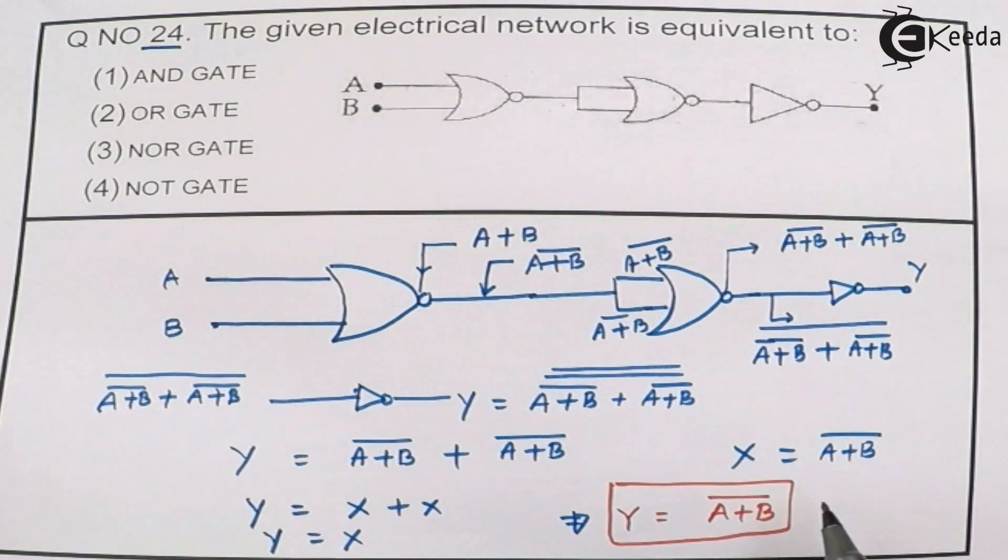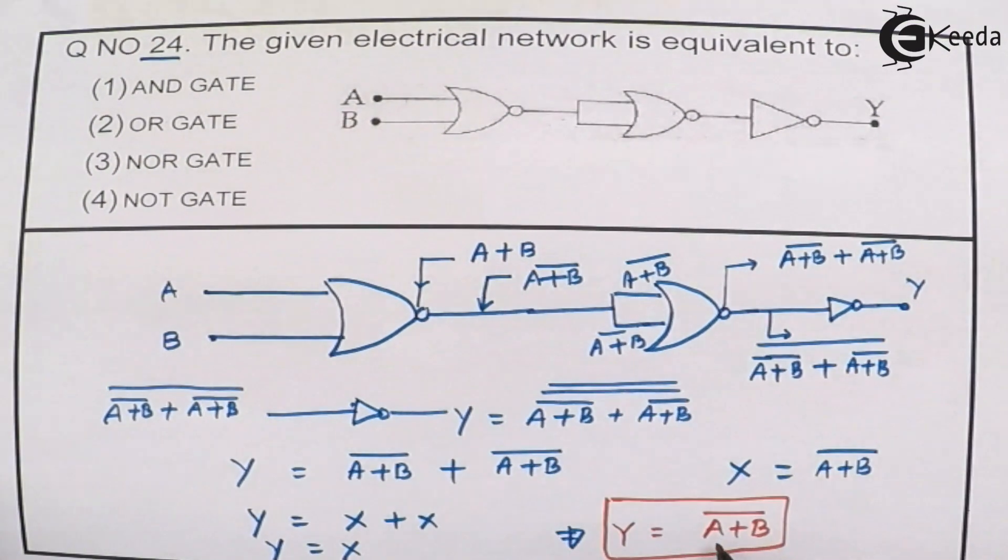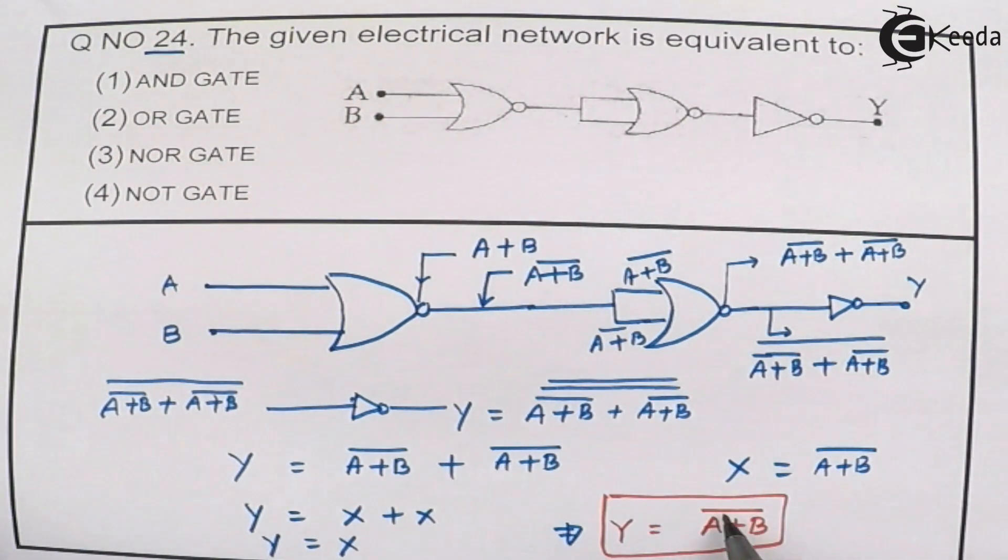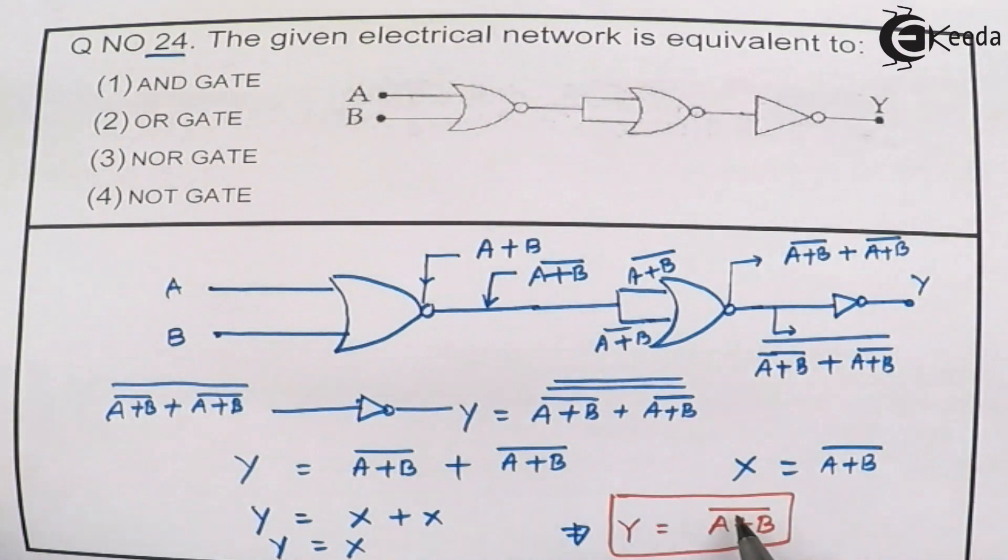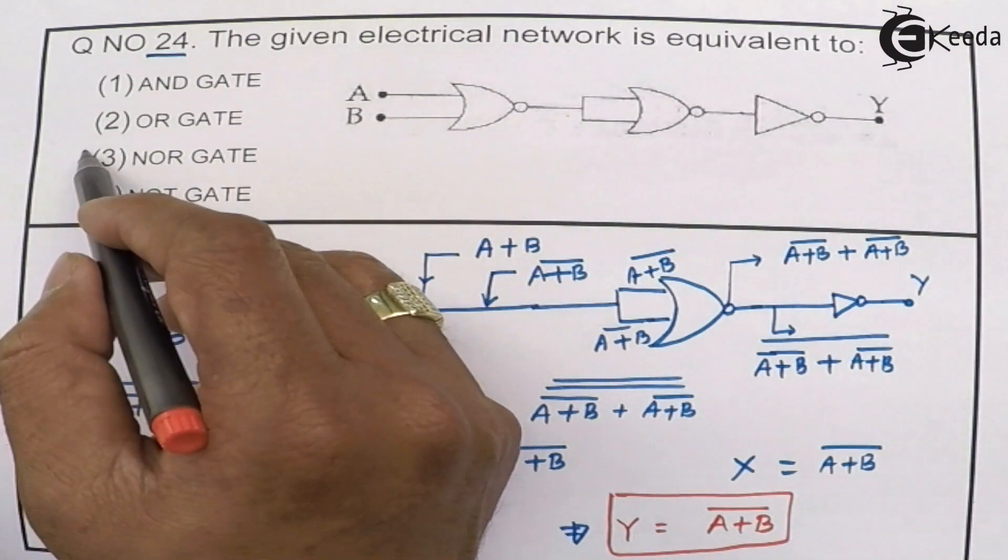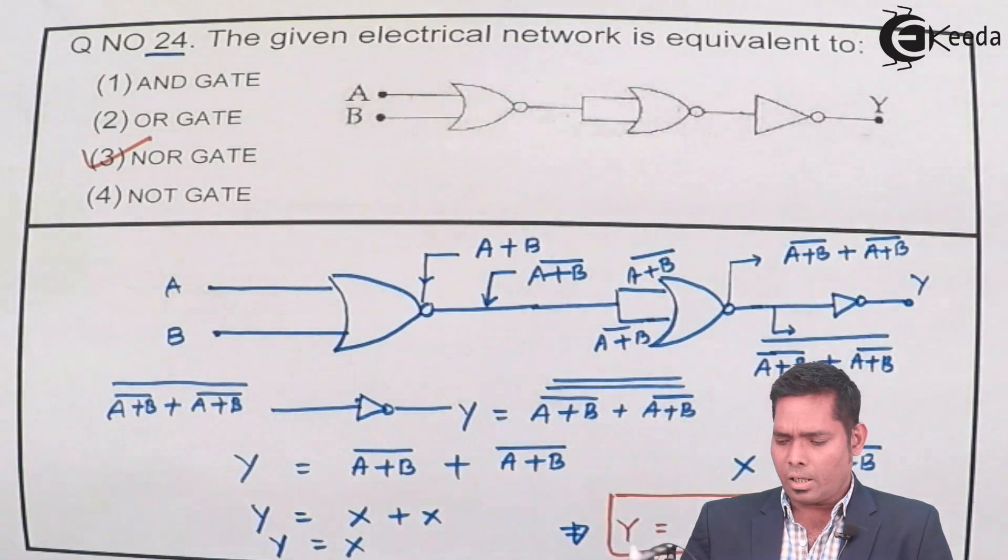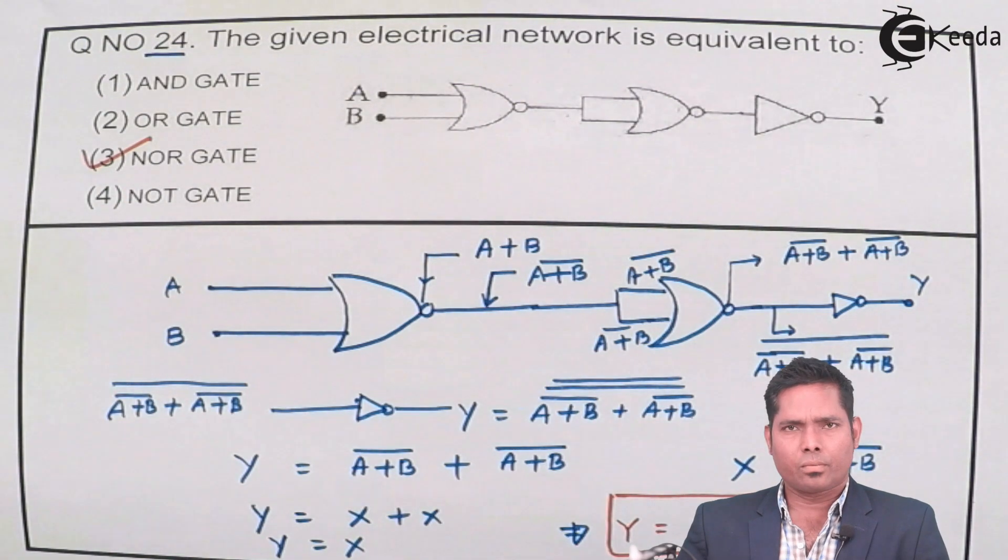And this is nothing but A plus B bar means what - this is OR and this is NOT, and this is a NOR gate. So option number three is correct, this is a NOR gate. Okay, thank you.